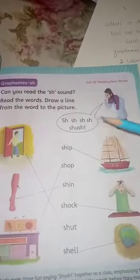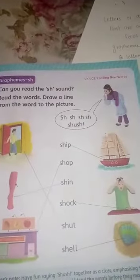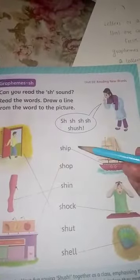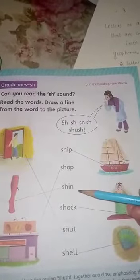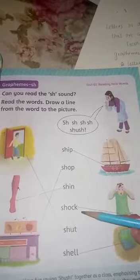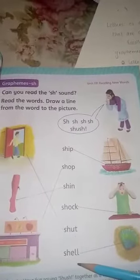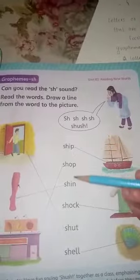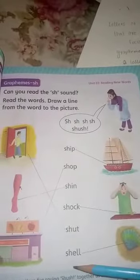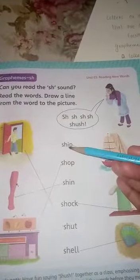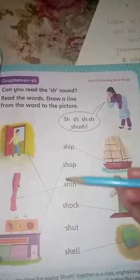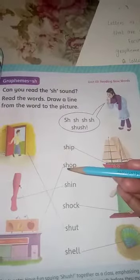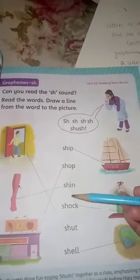We have read these words: ship, shop, shin, shock, shut, shell. These are grapheme-SH words. The grapheme is SH — SH, SH, SH.